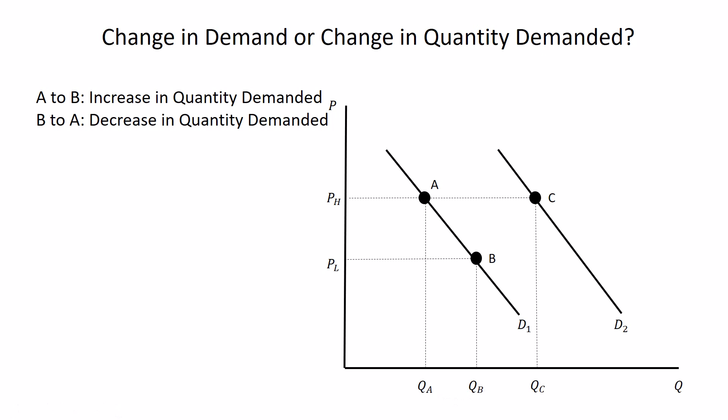Something we could get into is moving from point A to point B. Maybe the price drops from high price to low price, pH to PL. That would be an increase in the quantity demanded. Or going from B to A would be a decrease in the quantity demanded. We call this a change in the quantity demanded because the demand curve didn't move. Price moves, you move along the demand curve.